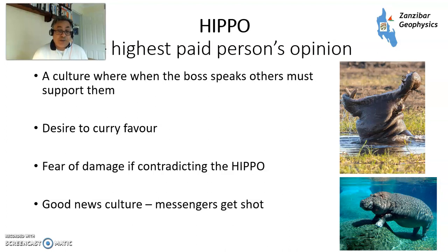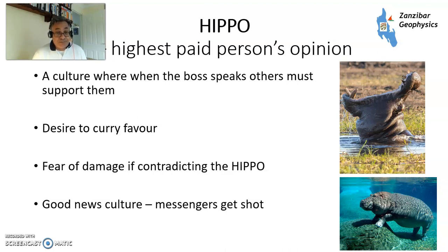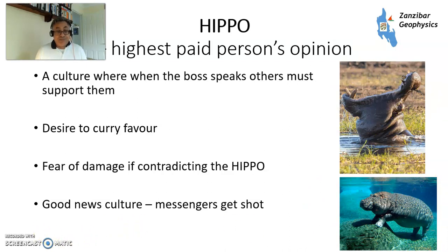Then there's HiPPO — the Highest Paid Person's Opinion. I read about this in a book by Matthew Syed, a British author. Basically, the highest paid person's opinion, or the boss's opinion, counts for a lot. In some cultures it counts for everything. So when the boss says something, everybody else supports them because they don't want to contradict the boss — perhaps even in private. Desire to curry favour, sycophancy, fear of damage from contradicting the HiPPO. So if you're the HiPPO — the highest paid person in the room — be a nice, calm, peaceful HiPPO and listen to other people, because you pay them to talk.